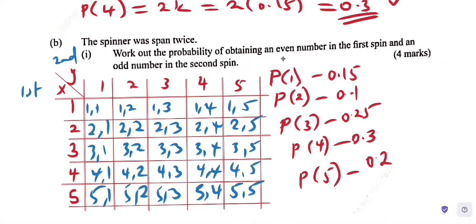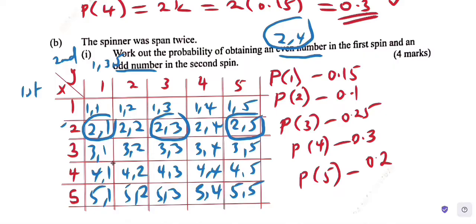You are told first is even number. Even numbers from 1 to 5 are 2 and 4. Second is odd number which is 1, 3, and 5. So first spin is 2 or 4. The combinations are: 2,1, 2,3, 2,5. Going to 4: 4,1, 4,3, and 4,5. So we circle these in the table. The probability is 6 outcomes.